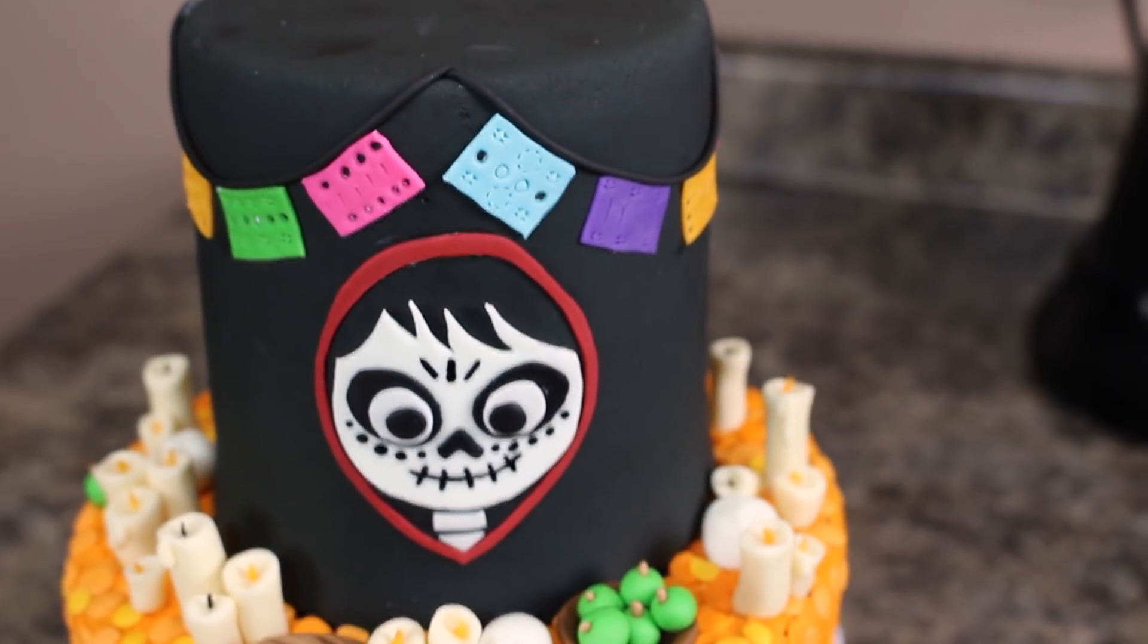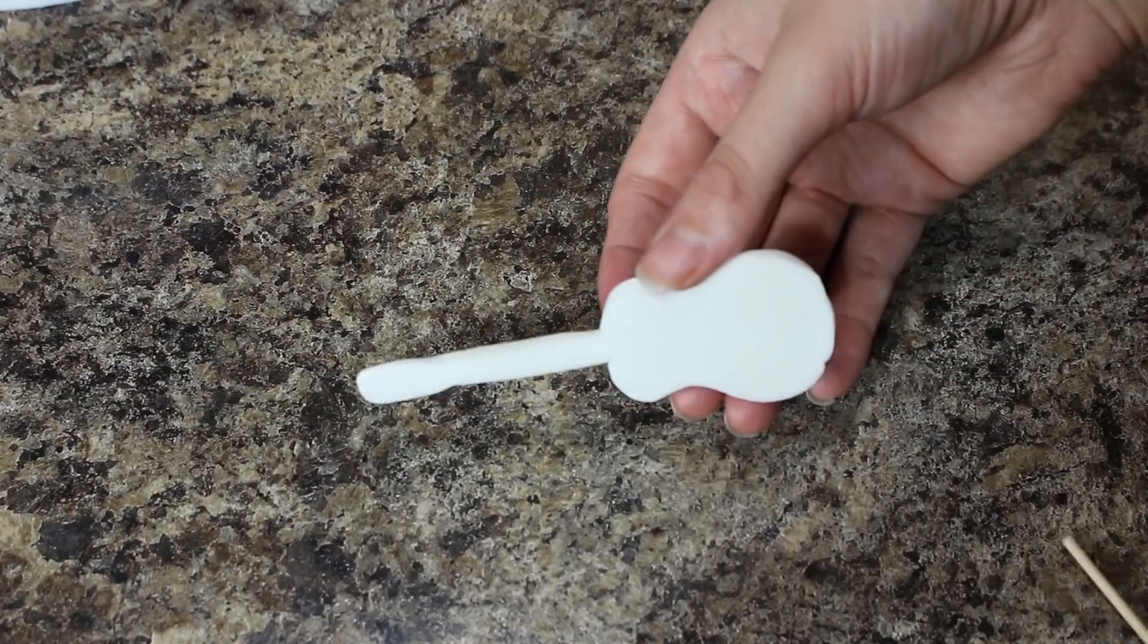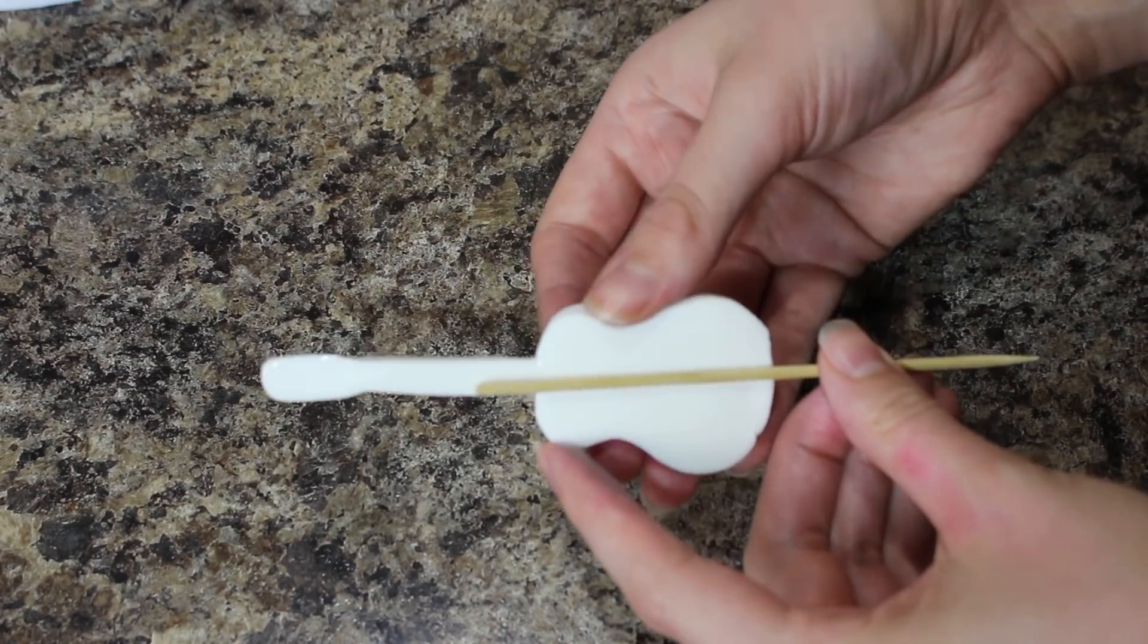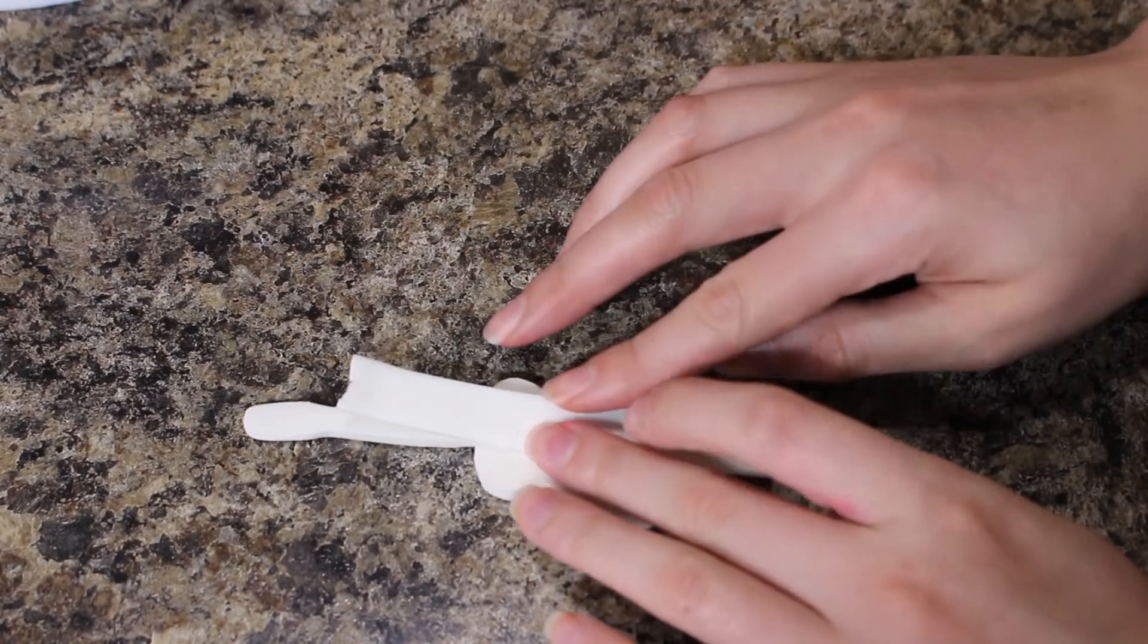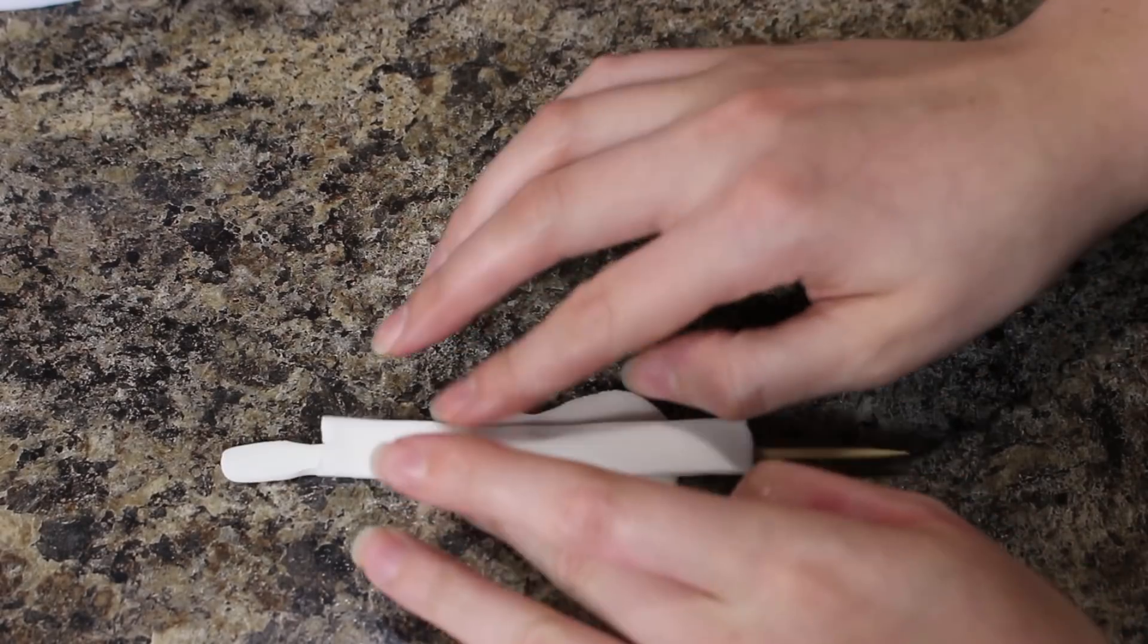And finally once my guitar was dry I flipped it over and added a skewer on the back and just used another piece of white fondant to hold that in place with a little bit of water and then I stuck that into the top of my cake.